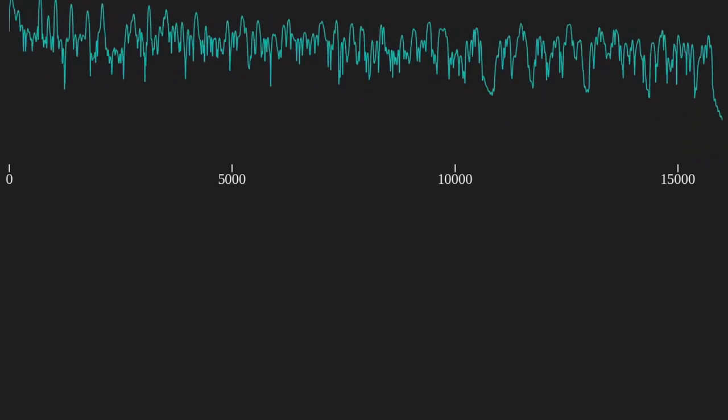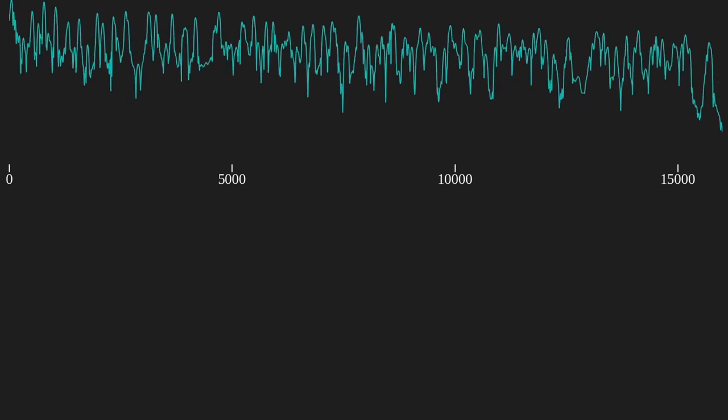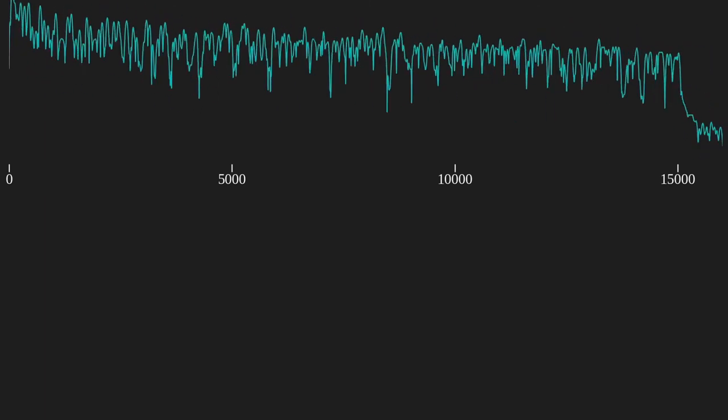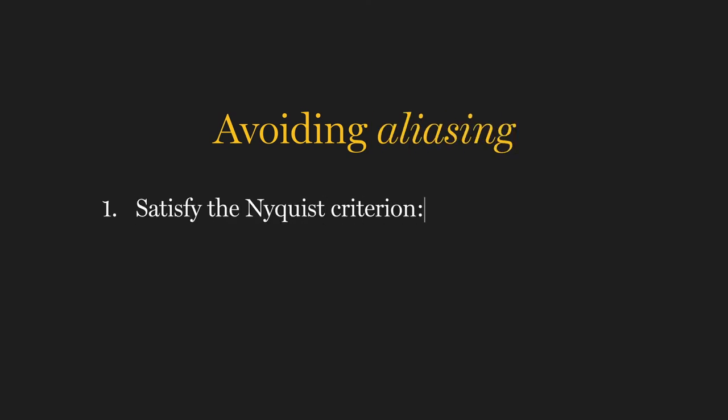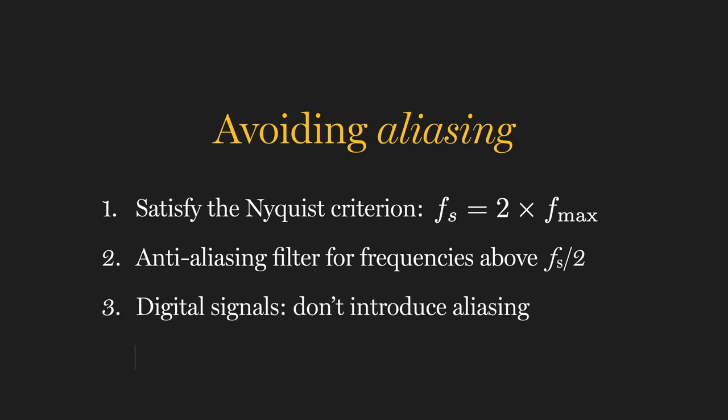But, for the most part, we want to avoid aliasing, particularly the unintended kind. So, to do this, we must first satisfy the Nyquist criterion, that is sample at more than twice the highest frequency we want to preserve. Second, we want to filter out an analog signal to remove frequencies higher than the Nyquist rate. Third, if we're generating signals digitally, we must take care to avoid unintentional aliasing. Fourth, we have to take special care when converting between sampling rates. Exactly how to do that is something we'll cover in the future. Rock on, and I'll see you in the next video.